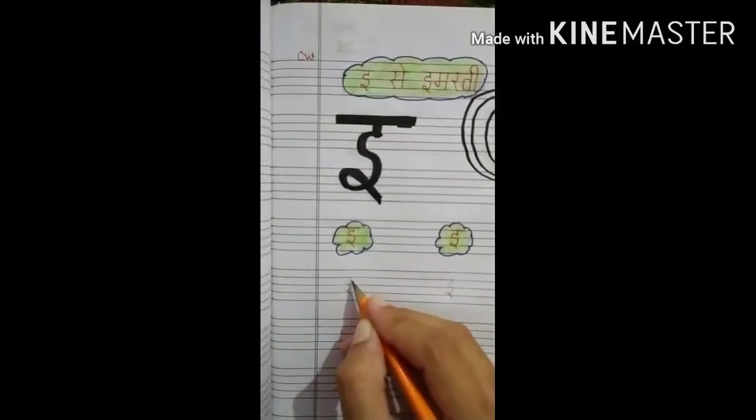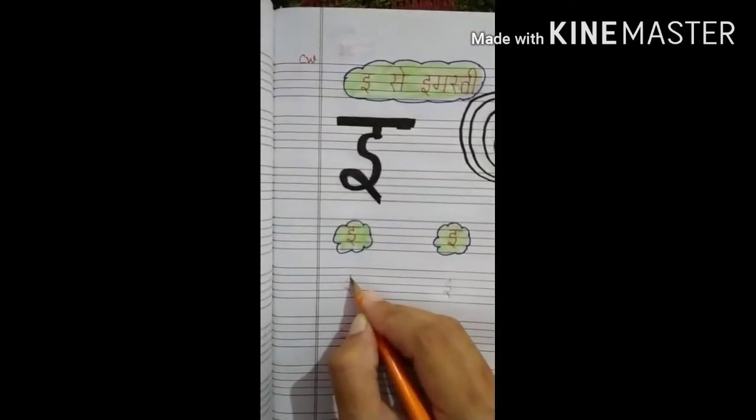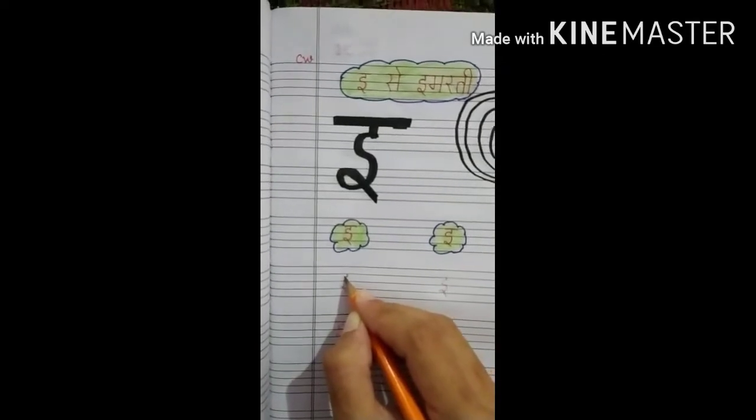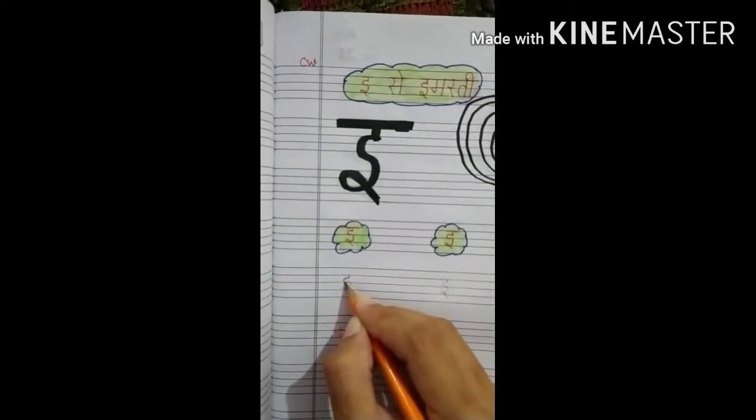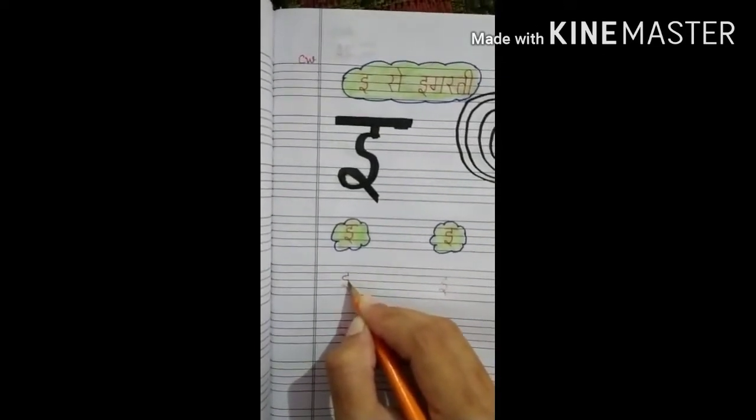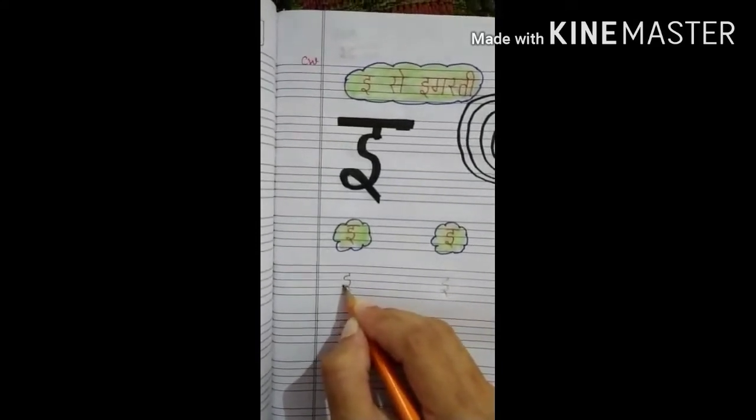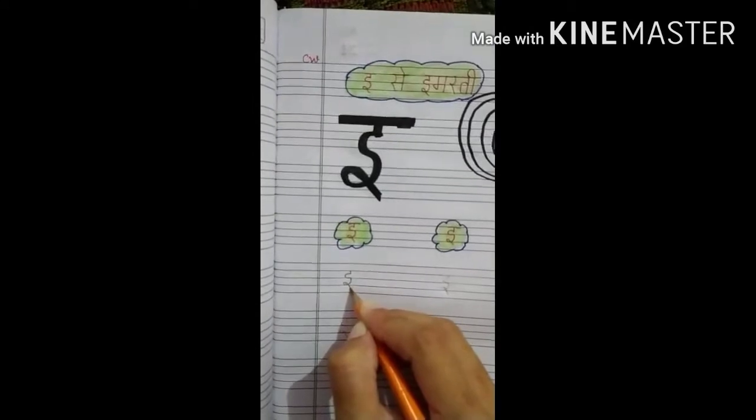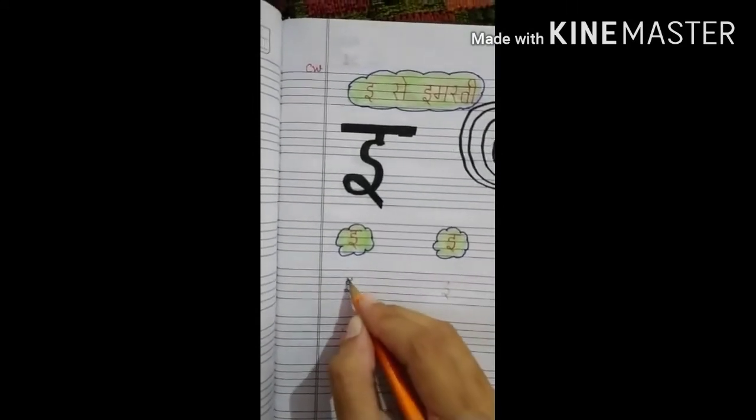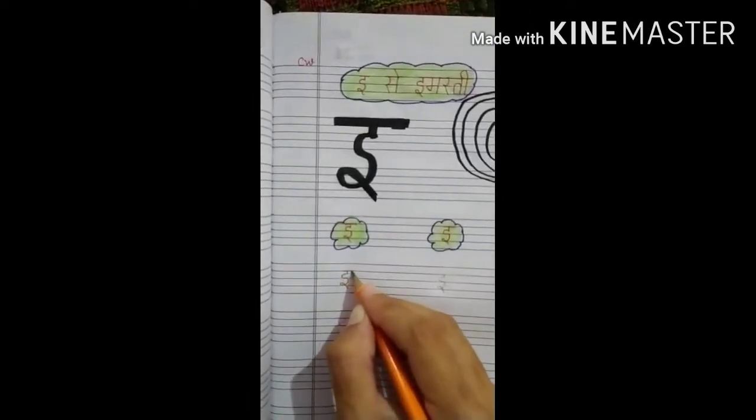Let's start. Small standing line. Turn and make left curve. Again turn and make right curve and go down. Go again to the top and make sleeping line.